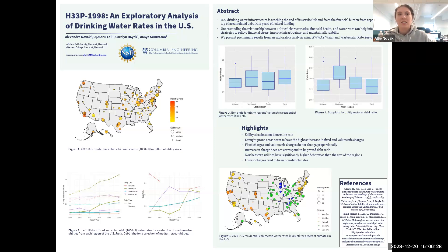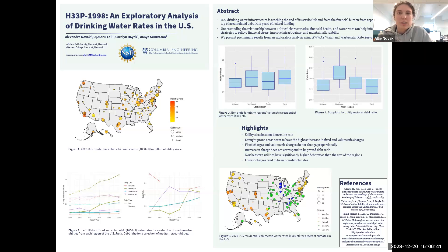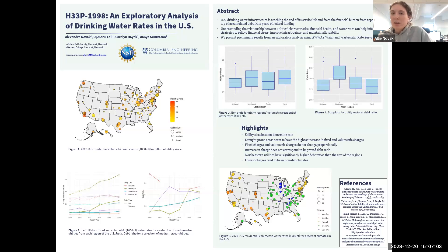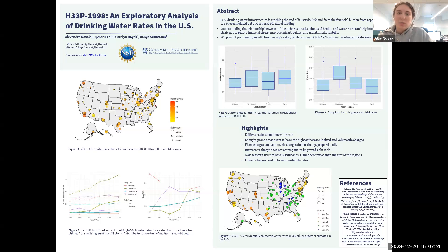These are the results from the first step of just looking at trends between some different characteristics. I'm using data from the American Water Works Association's Water and Wastewater Rate Survey, which is carried out every two years with utilities who are members of the AWWA. Something to keep in mind is that this data does not represent all utilities in the U.S. and tends to be biased toward medium and large utility sizes. I looked at utility size, climate, region, and debt ratio — which is total liabilities over total assets — as an indicator of the utility's ability to pay off their debt, and I also looked at some historic trends.